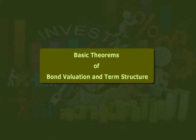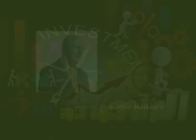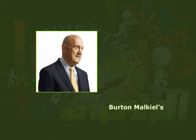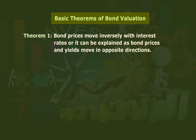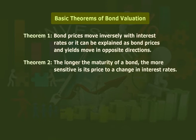Let us now learn some basic theorems of bond valuation and term structure. Bond prices often differ from face value over the period of time. Economist Bertrand Malkiel introduced five theorems that describe the relationship between bond prices and yields. These theorems are a conceptualization of the relationship between bond prices, yields, coupons, and maturity. Theorem one: bond prices move inversely with interest rates, or bond prices and yields move in opposite directions.